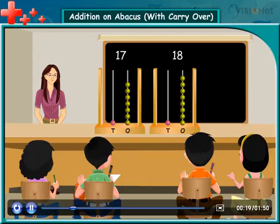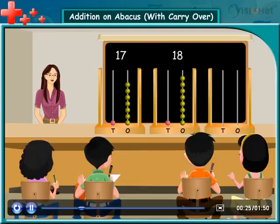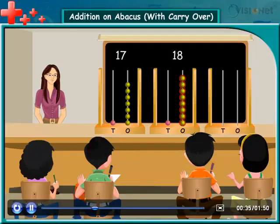Let me take another abacus for the result. Look at the ones spike of the first abacus, which has 7 beads, and in the second abacus it has 8. In total, there are 15 beads.